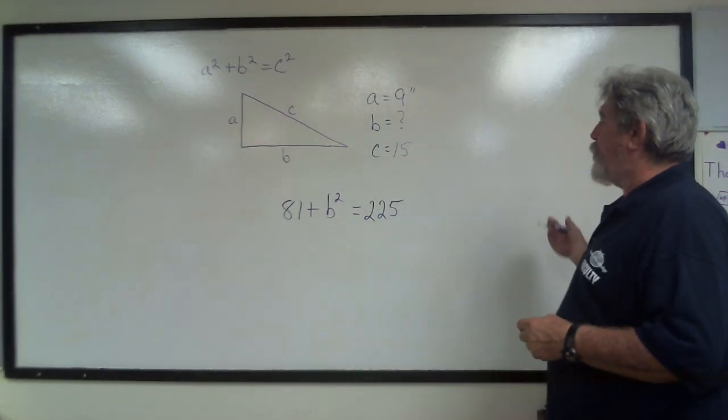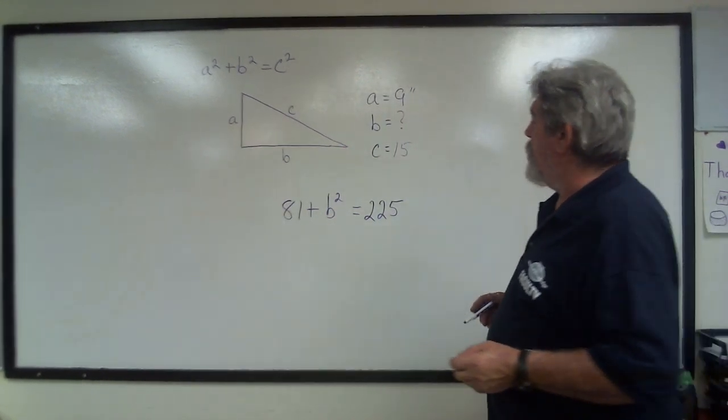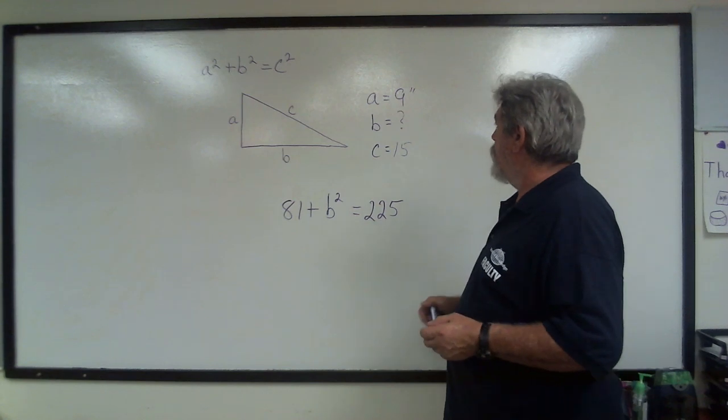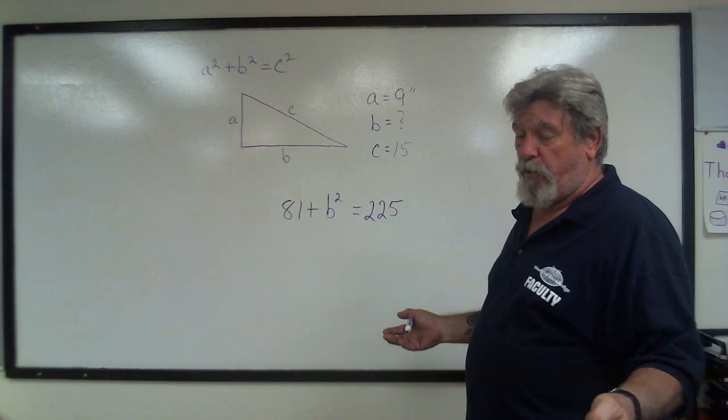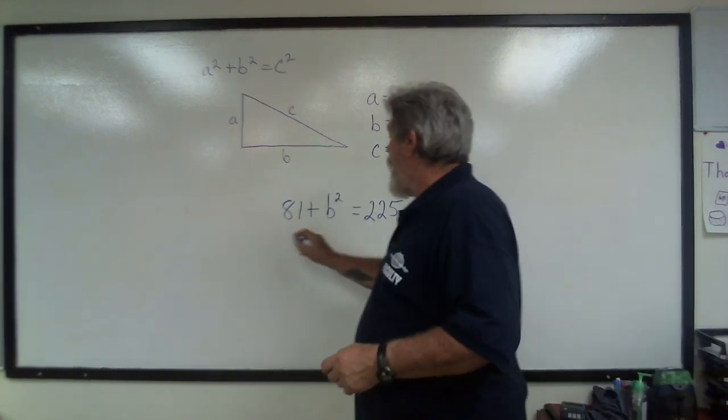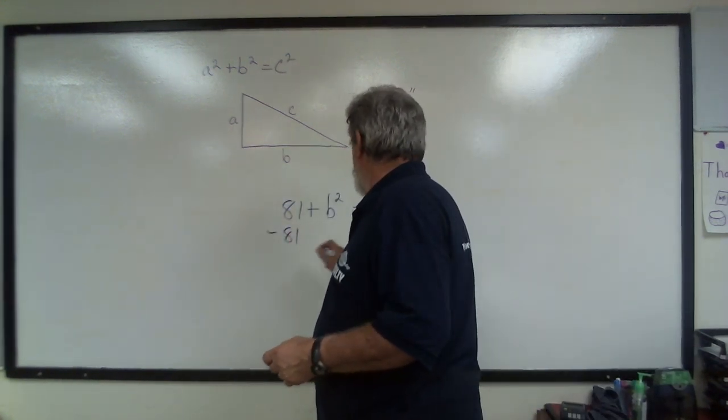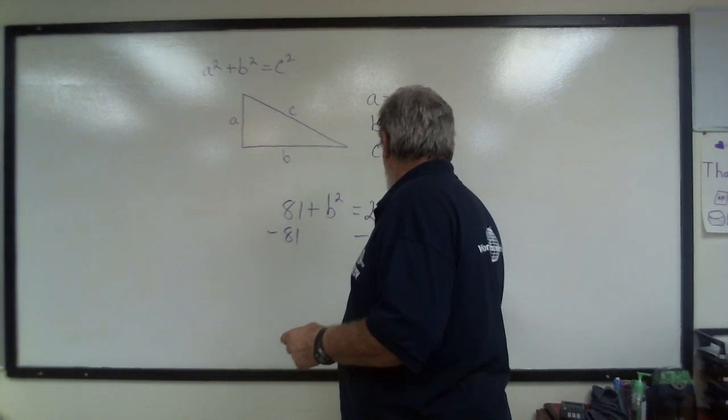A squared, which is 81, plus B squared, which we don't know, equals C squared. So we're going to solve this like we do anything else algebraically. We're going to subtract 81 from this side, subtract 81 from this side.